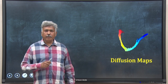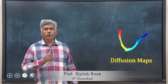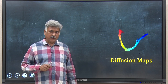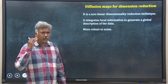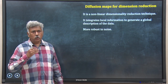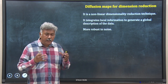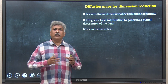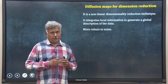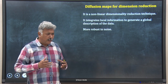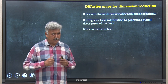Hello everyone, welcome back. In this lecture, we will learn diffusion maps for dimension reduction. Diffusion maps is a non-linear method to reduce the dimension of your data. It integrates the local information in your data to give a global representation of the whole dataset. It has been shown to be much more robust when you have noise in your dataset.